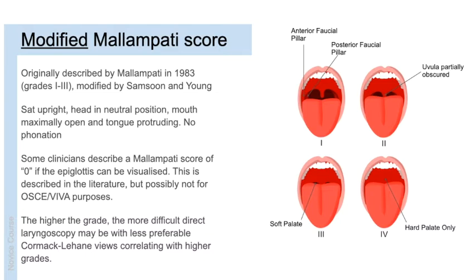Some clinicians describe a Malampati score of zero if the epiglottis is visible with the mouth maximally open — this is described in the literature but is not part of the modified Malampati score and is not worth mentioning in an exam or viva scenario. The relevance of this score is that the higher the grade, the more difficult direct laryngoscopy is likely to be, associated with less favourable Cormack-Lehane views, because the angle between the base of the tongue and the laryngeal inlet becomes more acute.